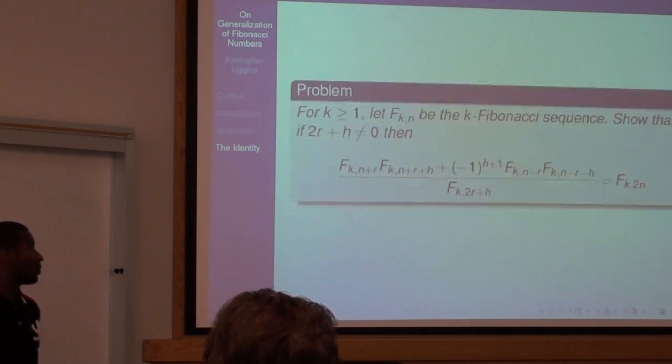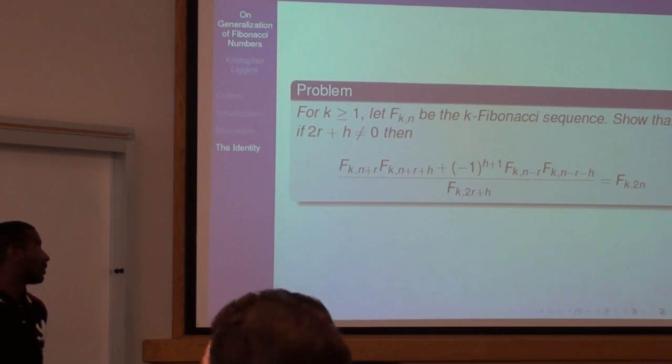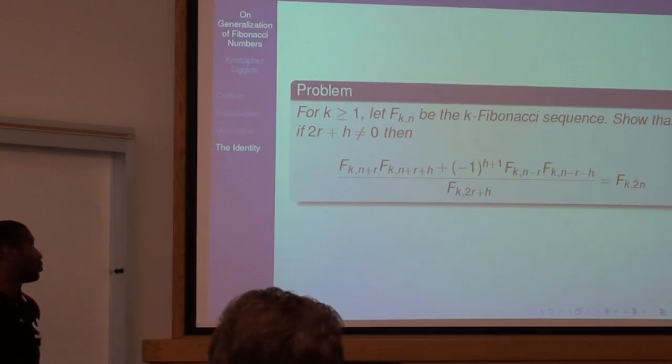The identity that we worked on: For k greater or equal to one, let F_k,n be the k-Fibonacci sequence. Show that if 2R plus H is not equal to zero, then F_k,n+R times F_k,n+R+H plus negative one to the H plus one.